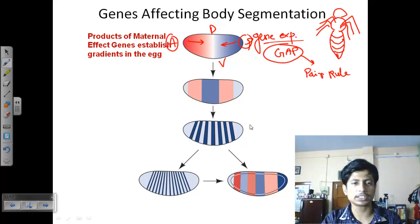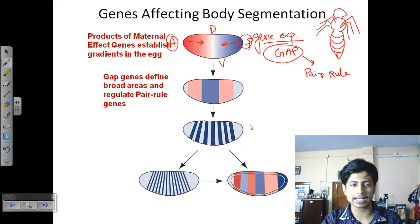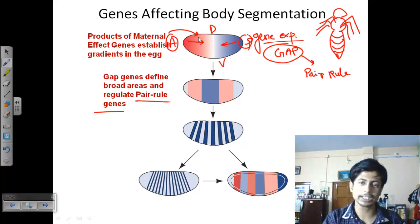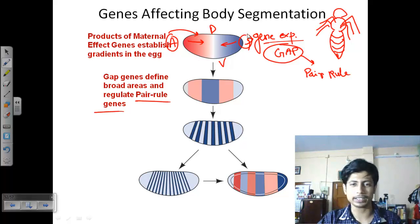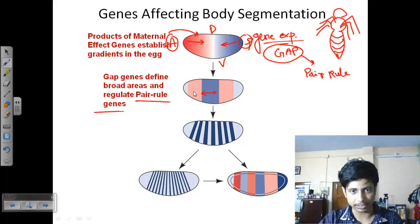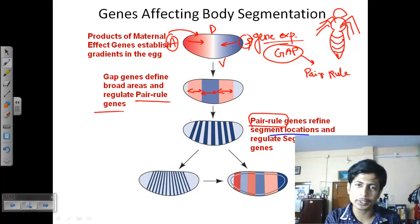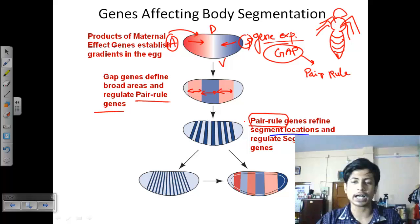Maternal effect genes establish the gradient in the cell. Gap genes define broad areas that will be regulated by pair rule genes. For example, bicoid is a maternal effect gene product present in the anterior; nanos and oskar are gene products that determine the posterior. Gap genes then segmentize the region and define areas that will produce different body segments. Pair rule genes then refine the segment locations.